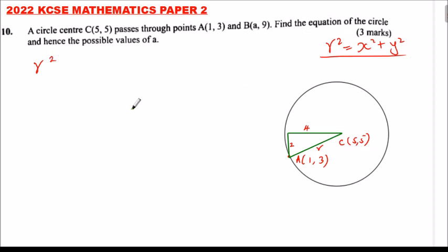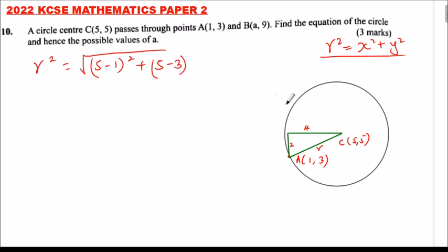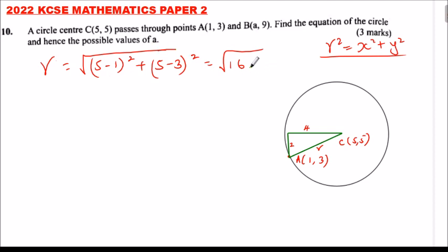When the center of the circle is not at the origin, the radius equals the square root of (5 minus 1) squared plus (5 minus 3) squared. That is the square root of 4 squared plus 2 squared, which is the square root of 16 plus 4, so r equals the square root of 20.